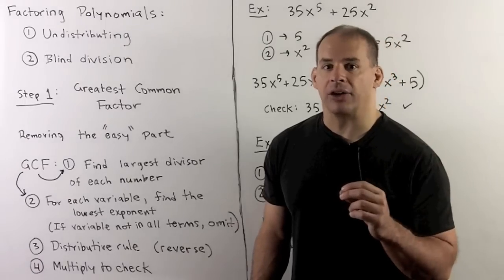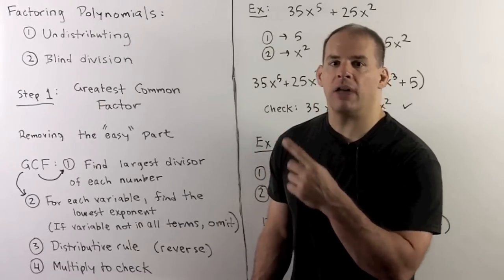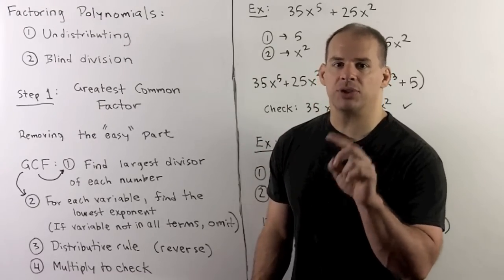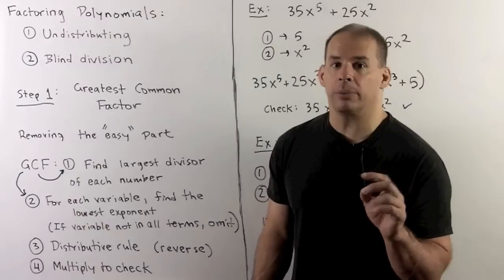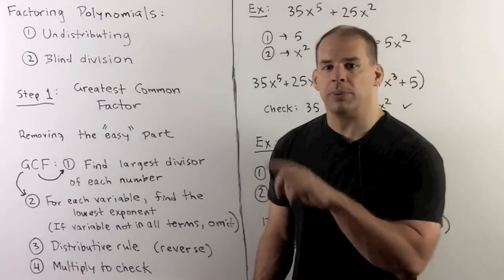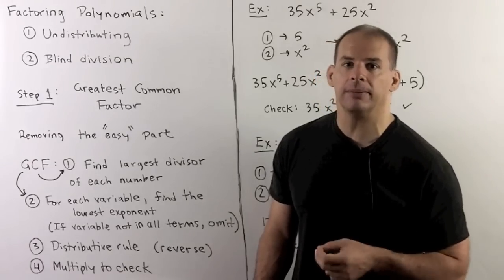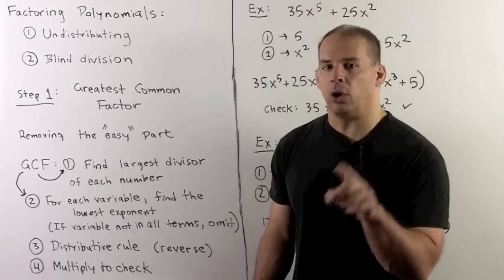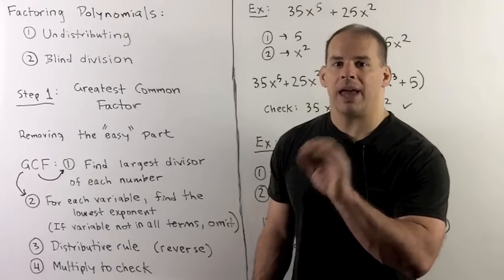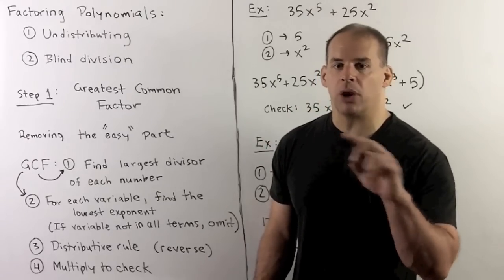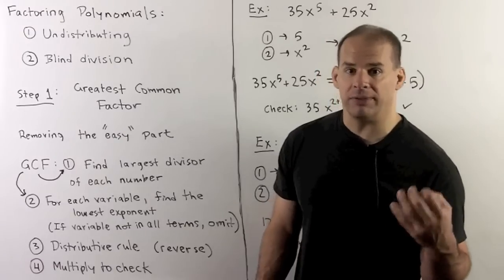What is factoring? Well, if I have an integer, say 12, I can write 12 as 2 times 2 times 3. We can't factor 2 and 3 down any further because they're prime. So a complete factorization of 12 is 2 times 2 times 3. For a given polynomial, we want to write that polynomial as a product of polynomials with smaller degree, such that they can't be factored any further.